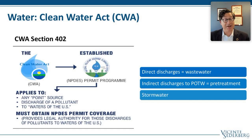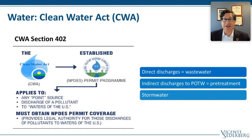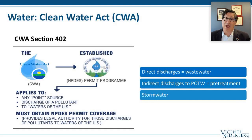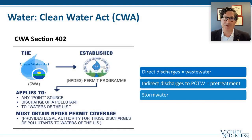Most cannabis companies, I'd be willing to bet, don't have pre-treatment permits or Clean Water Act permits. The penalty for not having a permit is up to $50,000 per day and up to three years in jail. It can be more if you are intentionally putting people in harm's way or causing imminent serious injury or death, and it can be less if it is negligent. Ignorance of the law is no excuse. That $50,000 per day per violation and up to three years in jail is where regulators usually start. So: direct discharges, wastewater, indirect discharges to a POTW requiring pre-treatment permits, and general permits for stormwater discharges.